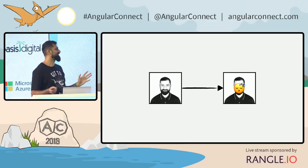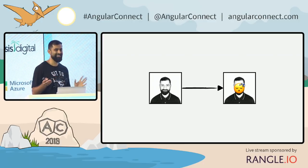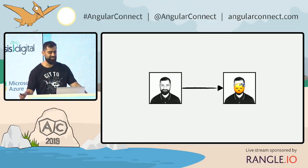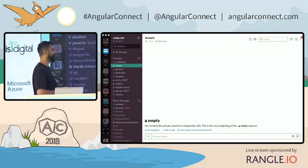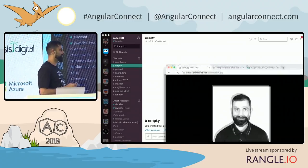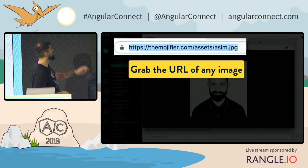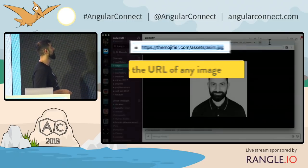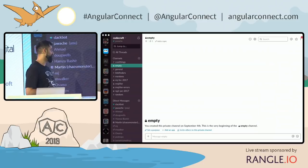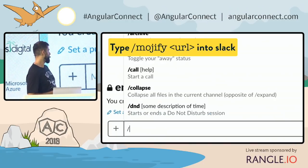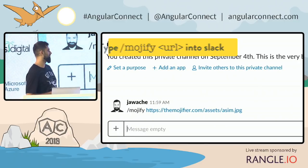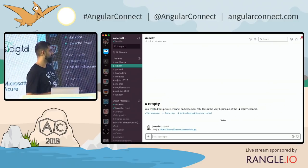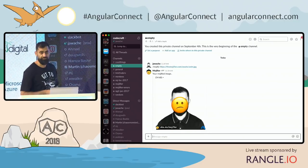I released this several times — it's had many different incarnations. The latest incarnation is as a Slack bot. If you go into Slack, you can grab any image, do slash Mojify with the image, and it Mojifies it.